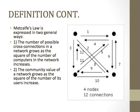Let's continue with the definition. Metcalfe's Law is expressed in two general ways. First, the number of possible cross-connections in a network grows as the square of the number of computers in a network increases. Second, the community value of a network grows as the square of the number of its users increases.